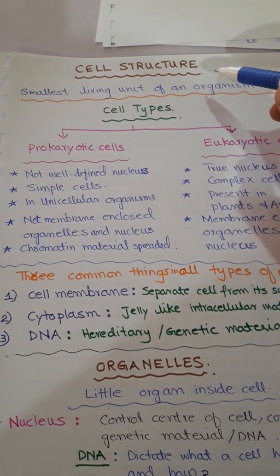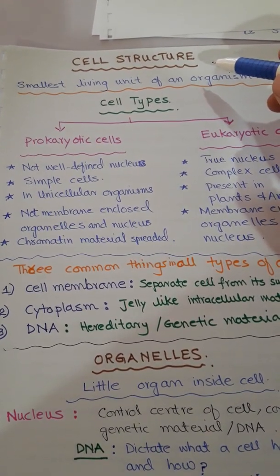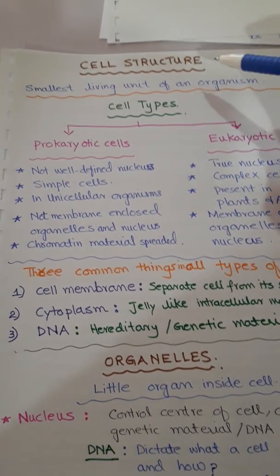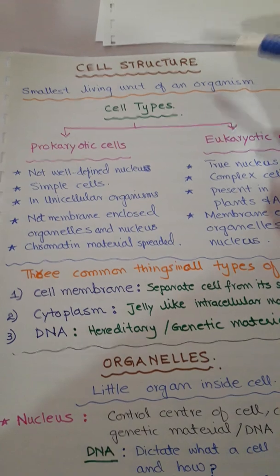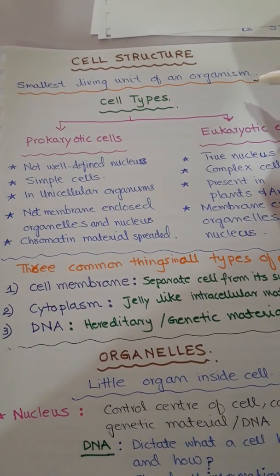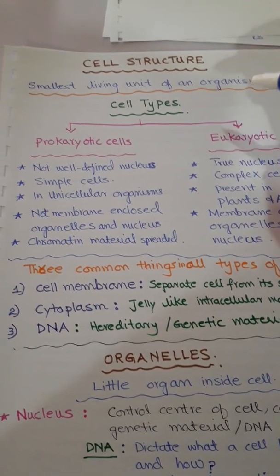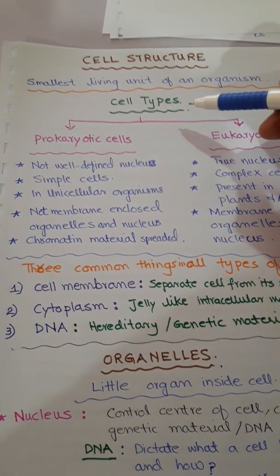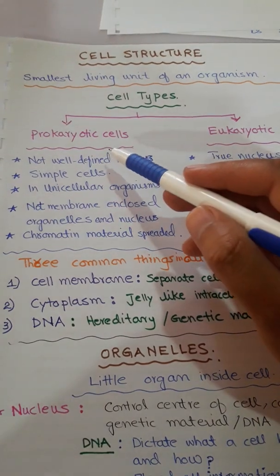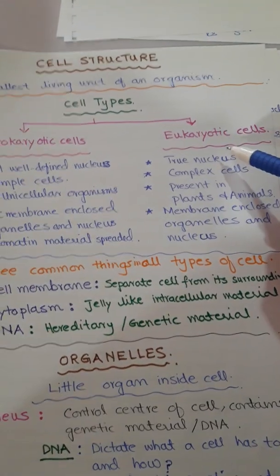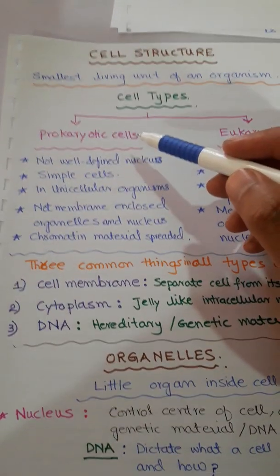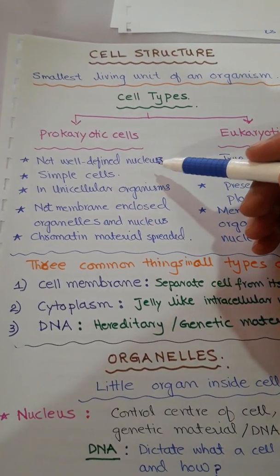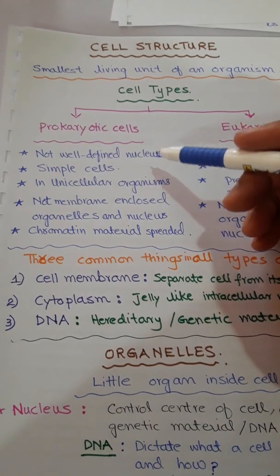The cell is the smallest living unit of an organism. We can categorize a cell into two broad categories: prokaryotic cells and eukaryotic cells. In prokaryotic cells, the nucleus is not well-defined — the nucleus is not membrane-bounded, and organelles are also not present inside membranes.